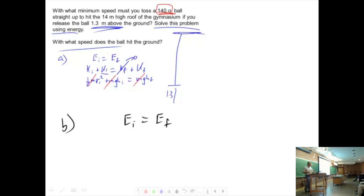So my final is just before it hits the ground. That's my final. My initial is the ball at the top of the ceiling. That's my initial state for part b. How fast does it hit the ground? Started from the roof, falls down.